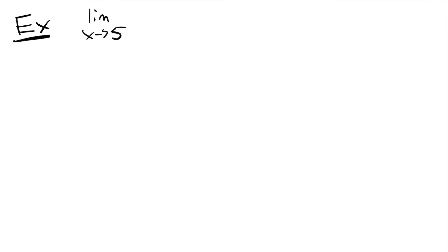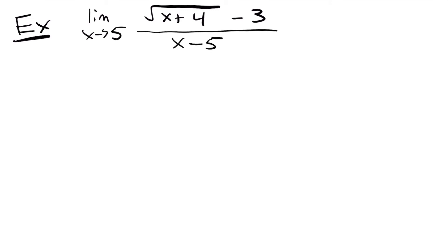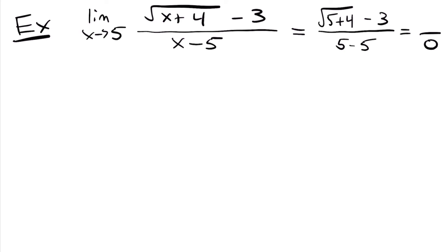The next example is the limit as x approaches 5 of the square root of (x plus 4) minus 3, all over x minus 5. Plugging in 5: the denominator gives 5 minus 5 equals 0, and the numerator gives the square root of 9 minus 3, which is also 0. So we have 0 over 0. A big indicator of what to do — if you see a square root, you're most likely going to want to rationalize. So that's what we'll do here: multiply by the conjugate of the numerator.